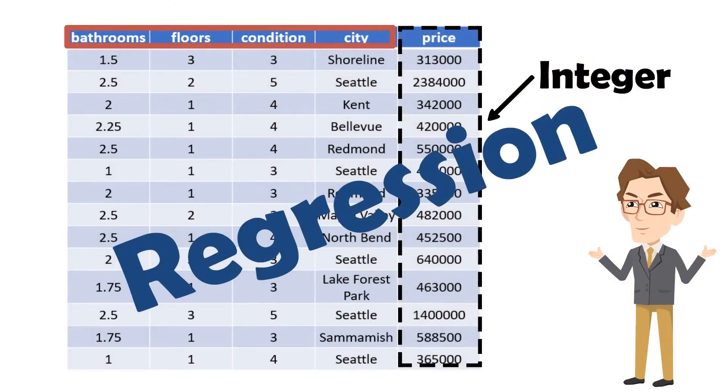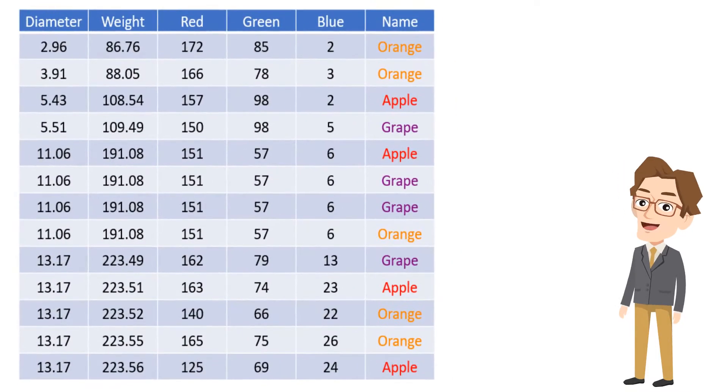This is how our regression data looks like. Now, let's talk about classification data.